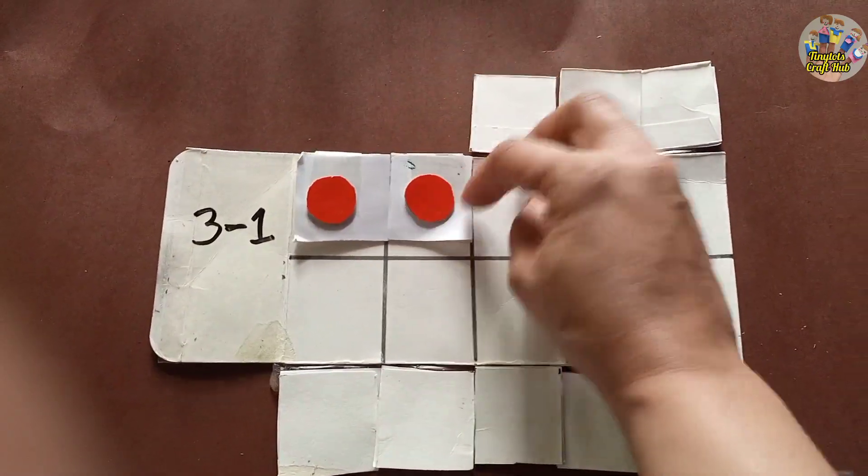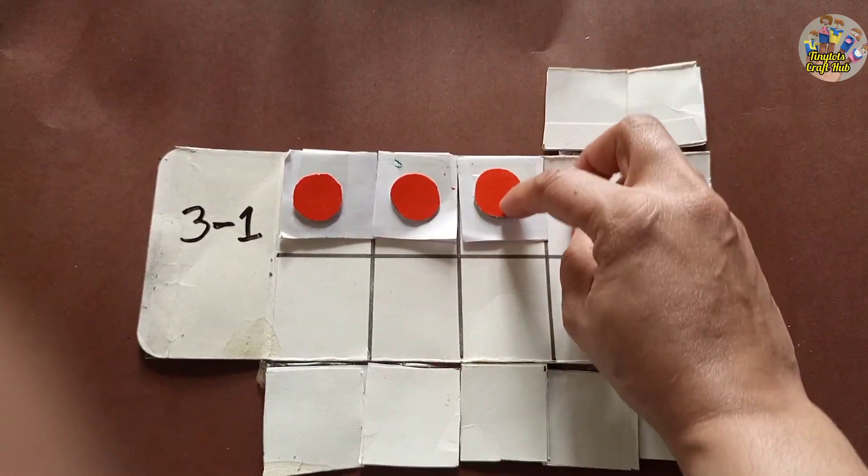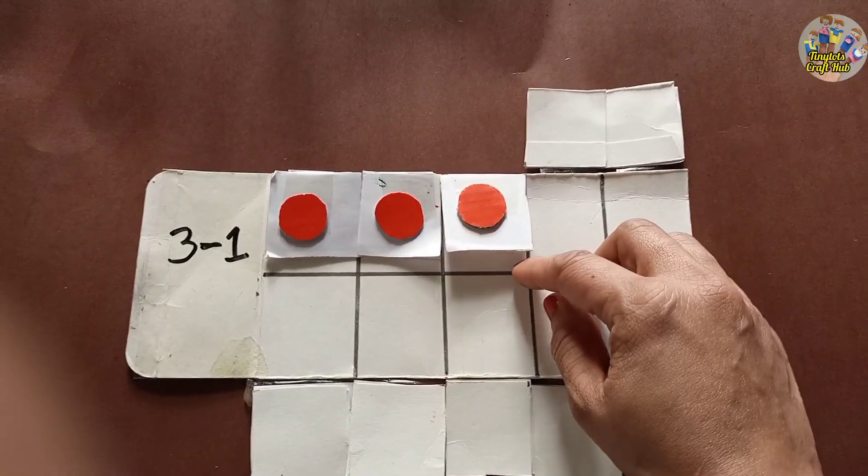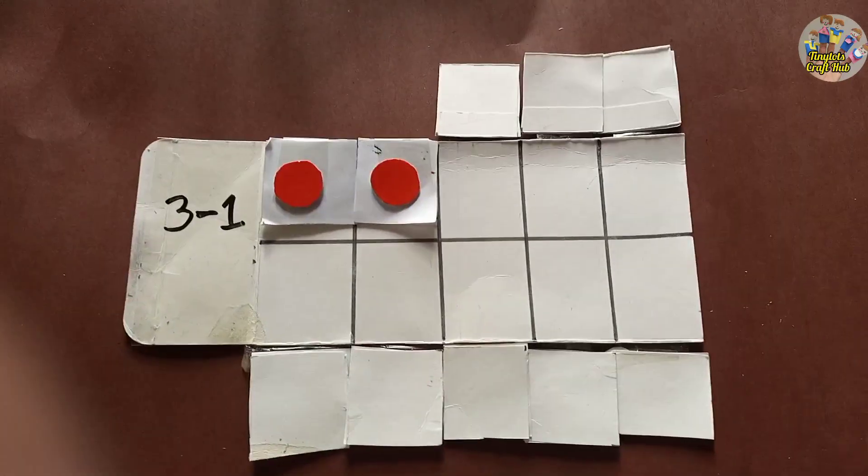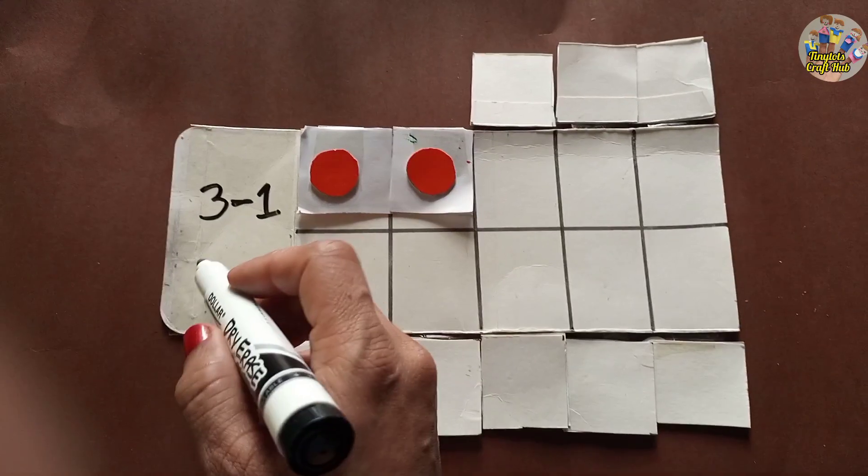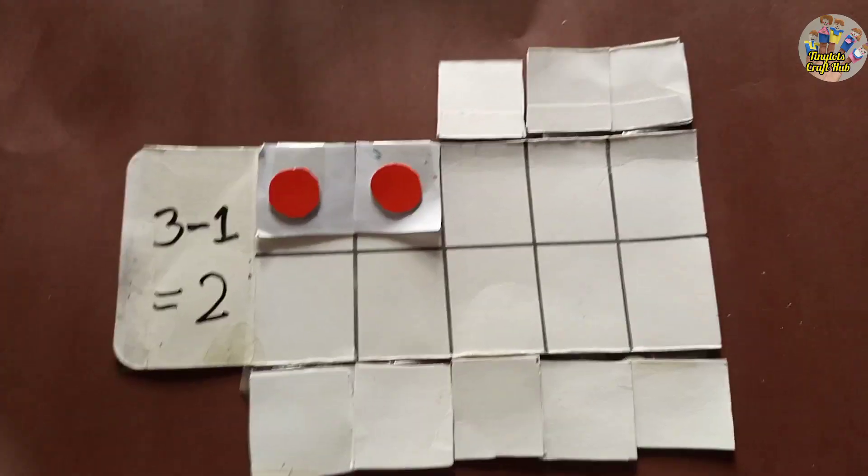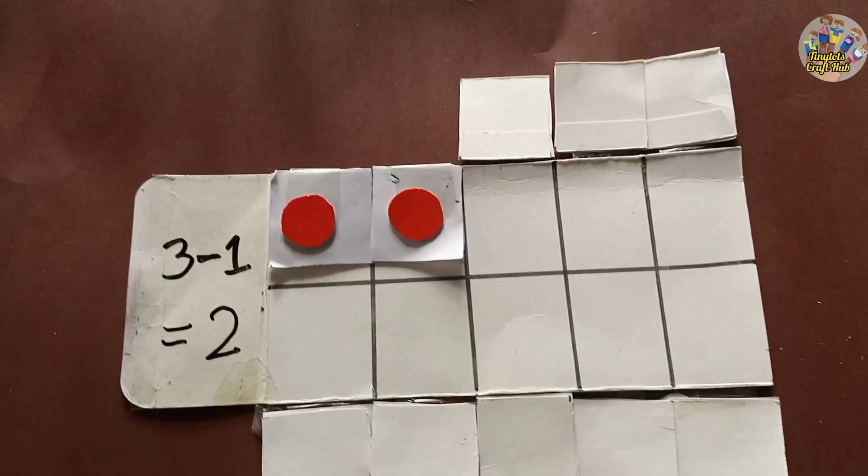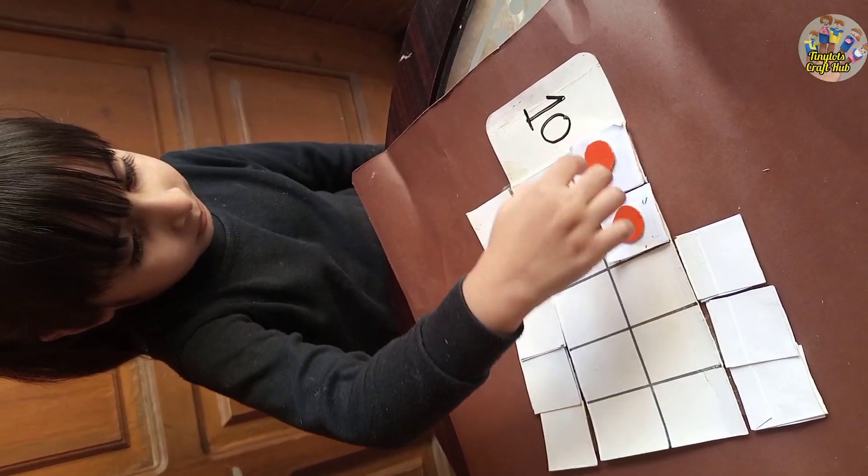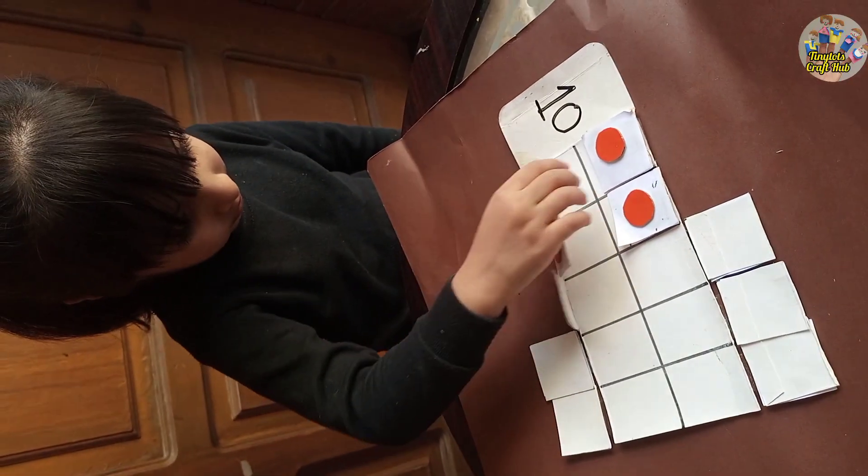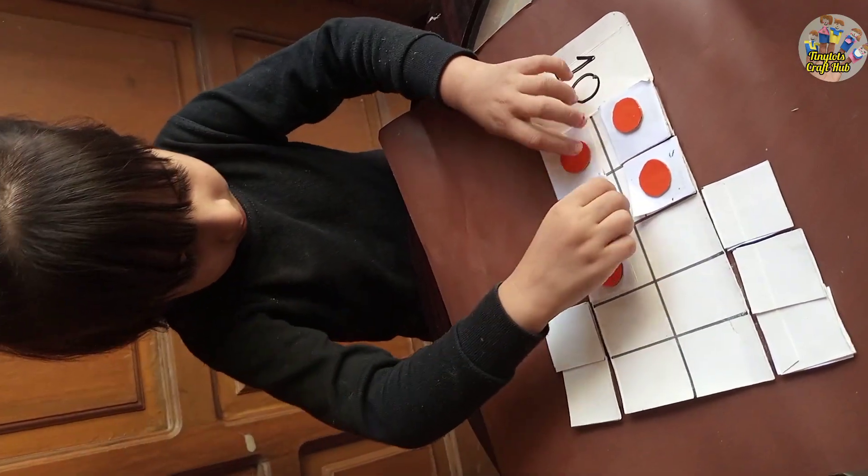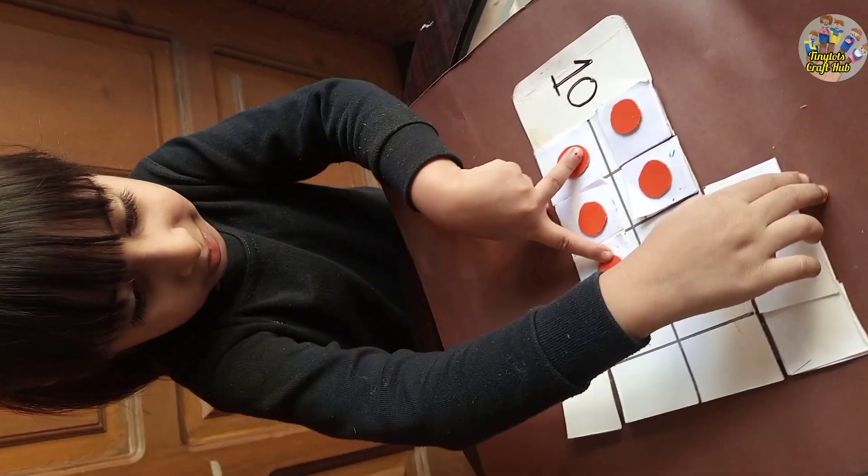Look, I am writing 3 minus 1. Your child will flip these cards like this - one, two, and three - and they will try to subtract one. They will know only two dots are left, so they will write two. Three minus one equals two.